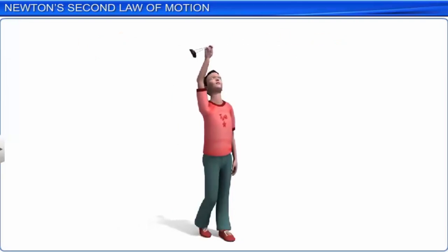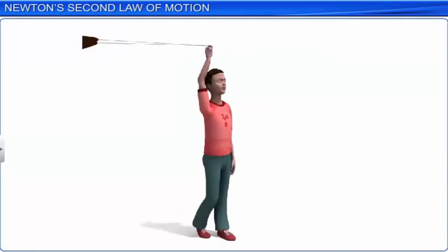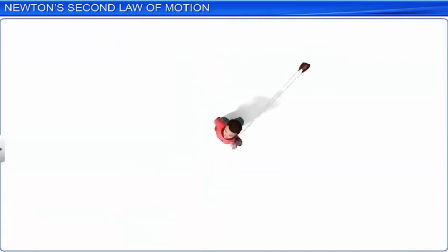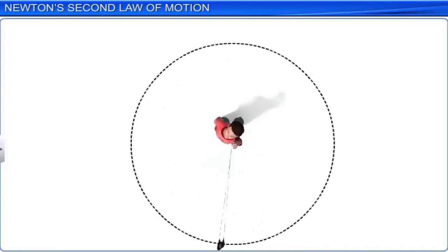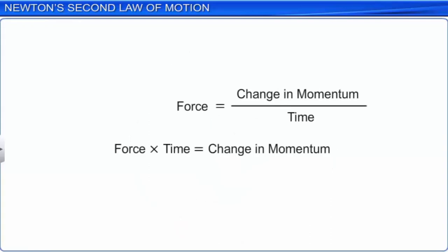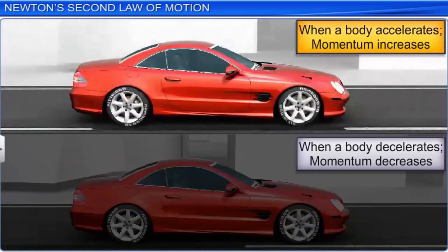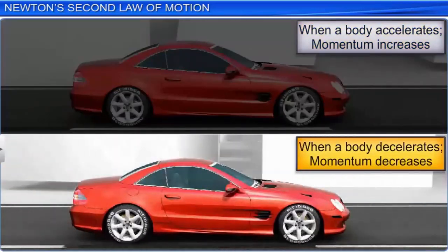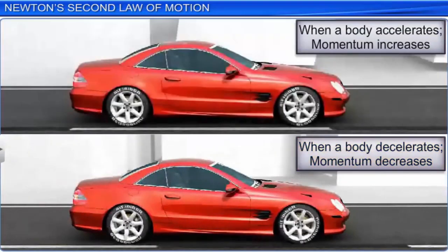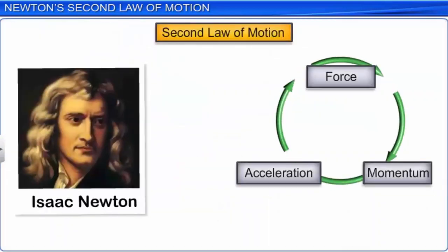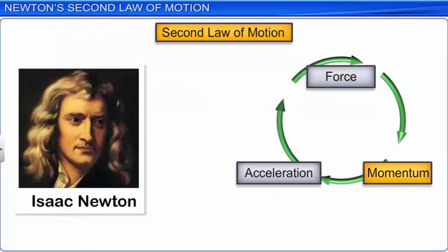Since the velocity vector changes direction continuously, the momentum vector also changes direction continuously, and this change requires some force. Consider a sling being whirled such that the stone and thread rotate in a horizontal plane with uniform angular velocity. The magnitude of the linear velocity of the stone remains constant, but its direction changes continuously. To sustain this kind of motion, we have to continuously apply a pulling force on the thread. Thus, a force has to be applied on a body for some length of time during which a change in momentum is taking place.